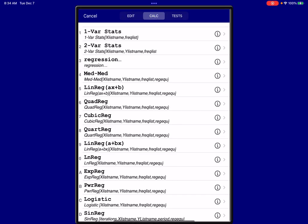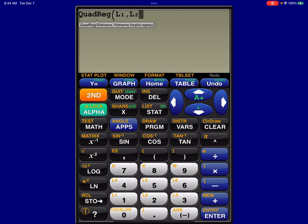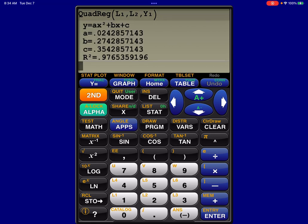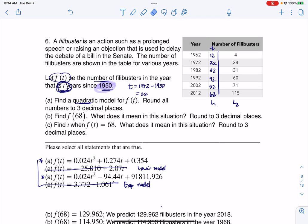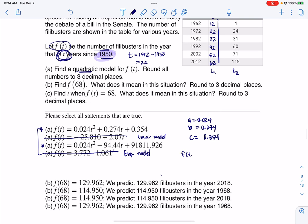We're going to hit stat, then go to calc. On the physical calculator, it's option 5. In the app, it's option 6. But it's still the same commands, L1, L2, and I'll drop this into y1. There are my numbers. My A value is 0.024, B is 0.274, and C is 0.354. So F(T) is 0.024T² plus 0.274T plus 0.354. That would be the correct option there.